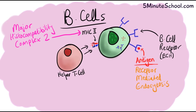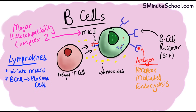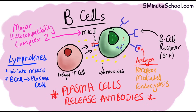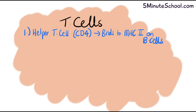The reason this occurs is it allows helper T cells, also known as CD4 lymphocytes, to recognize and bind onto the MHC class 2. Once bound, the helper T cell releases lymphokines. Lymphokines cause the B cell to clone itself via mitosis, producing more B cells with the same receptors, and cause the B cells to differentiate into plasma cells. The main function of plasma cells is to release antibodies specific to the antigen that was initially bound.